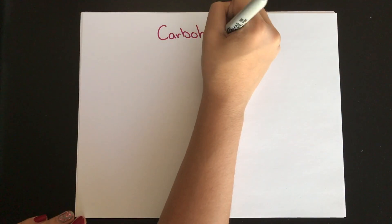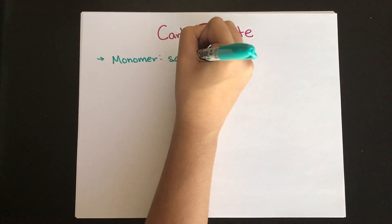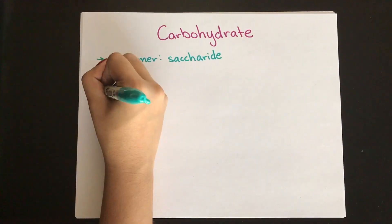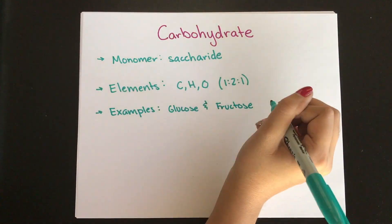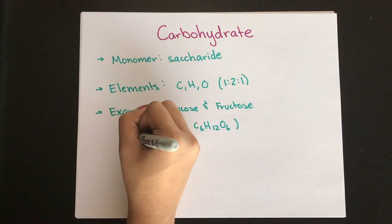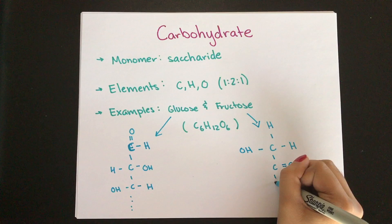Next, we're going to talk about carbohydrates. Their monomer is a saccharide, and they're made up of carbon, hydrogen, and oxygen, typically in a 1 to 2 to 1 ratio. Examples of carbohydrates are glucose and fructose, and it's important to remember that they differ in the way that they are double bonded to the oxygen.